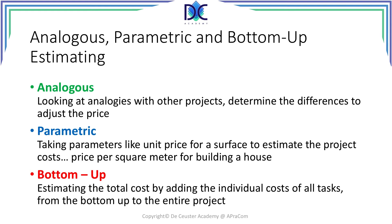Analogous estimating compares your project with other projects. Based on the comparison, we may adjust parameters related to surface, capacity, or inflation to make an estimated price. Parametric estimating takes a parameter — for example, one square meter of flooring costs a certain amount, so 100 square meters costs 100 times more. These are elements which are easy to use in estimations. Bottom-up estimating means we start the estimation from the activities or work packages and then add all those estimates together to find the total project budget.